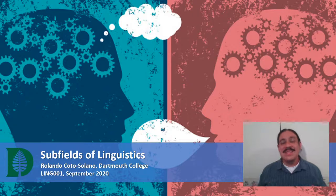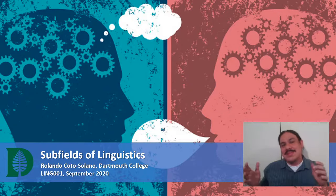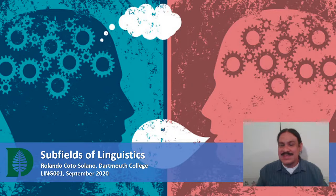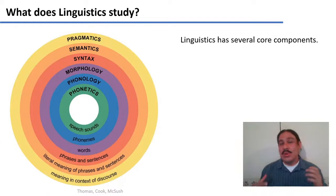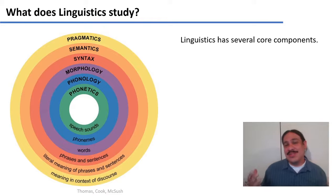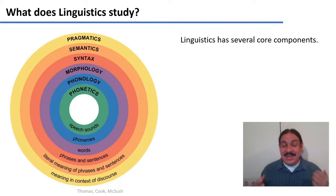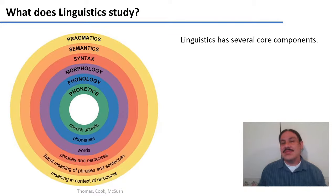Welcome back. In this video we'll talk a little bit more about the different components of linguistics, its subfields. We've seen this diagram before. We are going to study several core components of linguistics: phonetics, phonology, morphology, syntax, semantics, and pragmatics, and each of these is going to get a week in our class. But let's look very briefly at what they are.